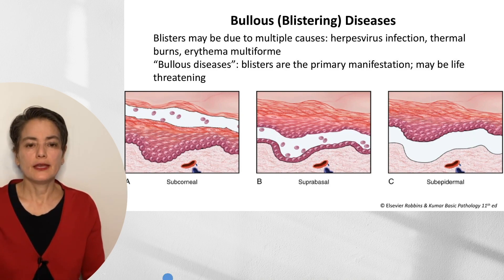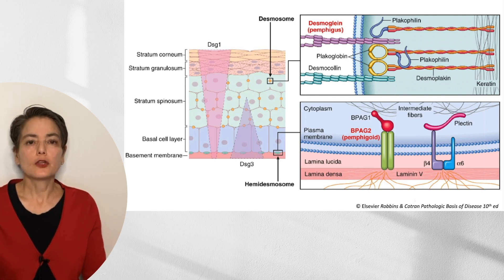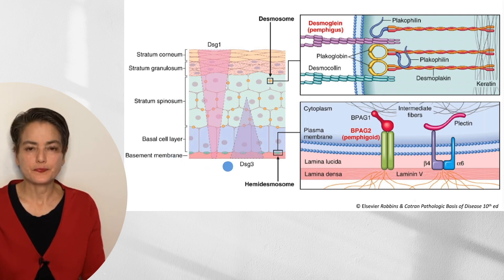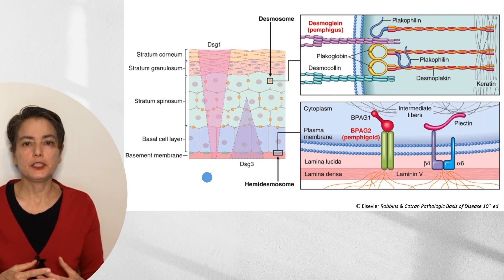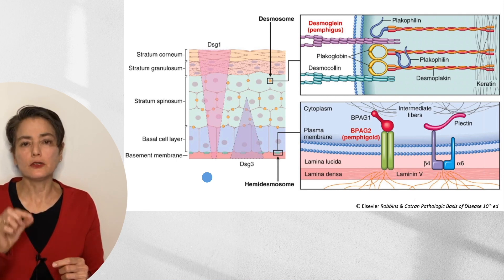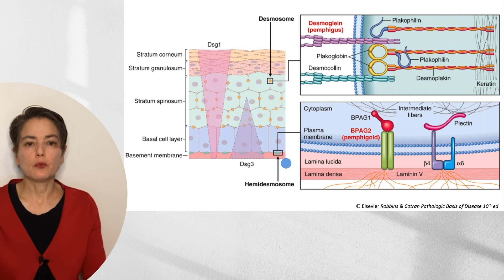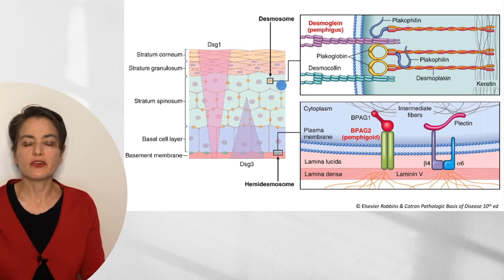This is an image from Robbins and Cotran, Pathologic Basis of Disease — a busy slide, but with a lot of information to help you understand the pathophysiology. We have our stratum corneum, stratum granulosum, stratum spinosum, basal cell layer, and the underlying basement membrane. The keratinocytes are attached to each other by desmosomes that hold them together very tightly. When you see edema in the skin, there'll be a space between keratinocytes, and you can see the little bridges where the desmosomes are still attached. We also have hemidesmosomes, which attach the basal cell layer to the basement membrane. The desmosome is composed of a number of different proteins; for this talk, we'll focus on one called desmoglion.